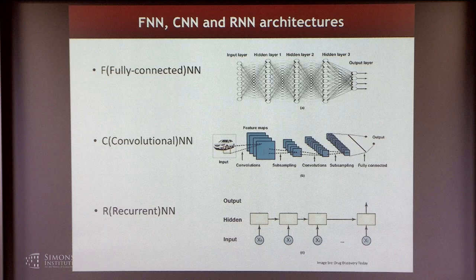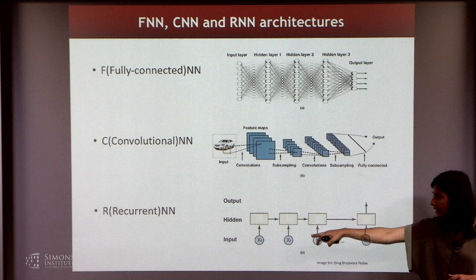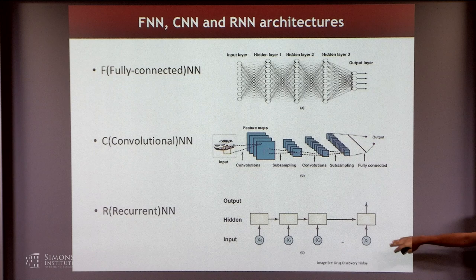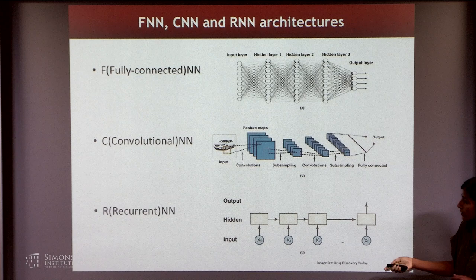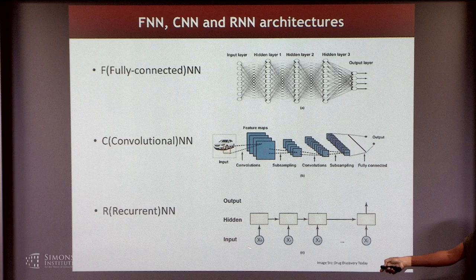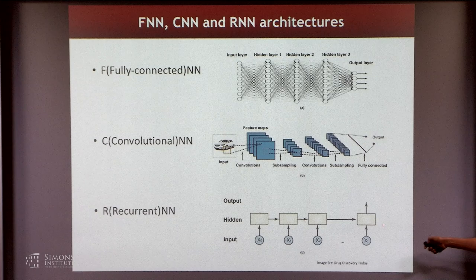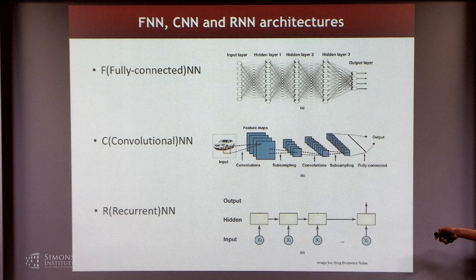CNNs save on the number of parameters being used to map the input to the output. Recurrent neural networks do the same thing except with sequential data. The input is divided into segments — this could be a text document and these are the different words. Each segment is mapped to a lower dimensional space. Originally, the segment could be part of a very high-dimensional space, say your features being the entire vocabulary, but they are mapped to a lower-dimensional hidden space, with an evolution governing the hidden states, and finally you predict the output or label.